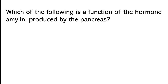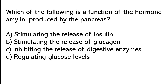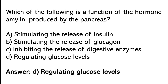Which of the following is the function of the hormone amylin produced by the pancreas? Stimulating the release of insulin, stimulating the release of glucagon, inhibiting the release of digestive enzymes, or regulating glucose levels. The correct answer is option D — regulating glucose levels.